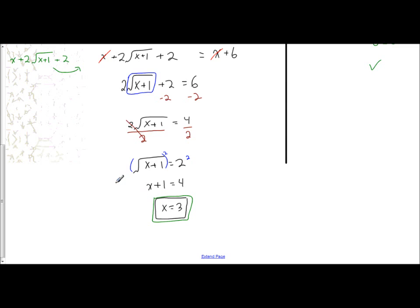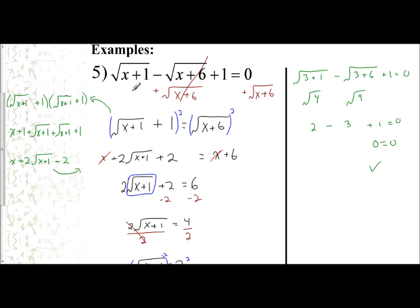This one was more complicated because the radicals were on the same side and there was a constant to take into consideration. When you do this type of problem, do move the radicals to opposite sides. However, be careful that when you are squaring two terms, actually write out what it means to square — multiply by itself, then distribute, combine like terms, and put it back in. Let's look at example six.